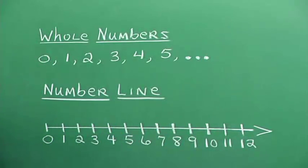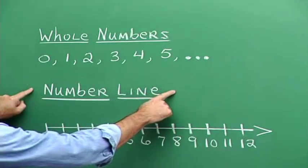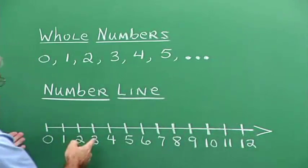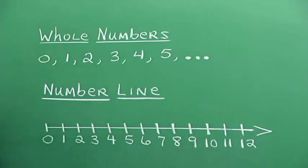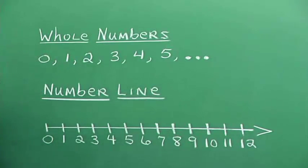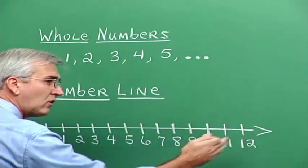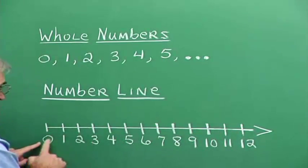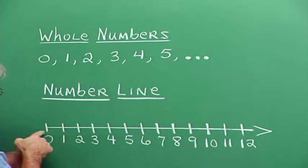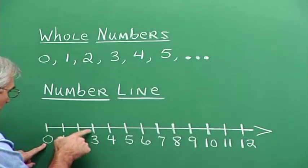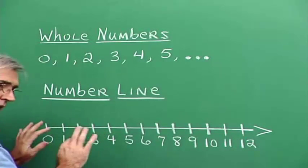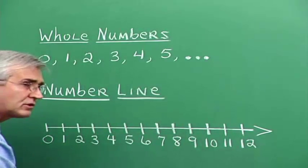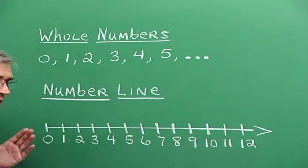Often, whole numbers are illustrated using a number line. Here's a number line, and the various whole numbers are just illustrated as positions along the number line. A number line is nothing more than a ruler — it can be thought of like a ruler. And the numbers are just telling us a distance from zero. Here we're one unit away from zero. For three, we're three units away from zero.